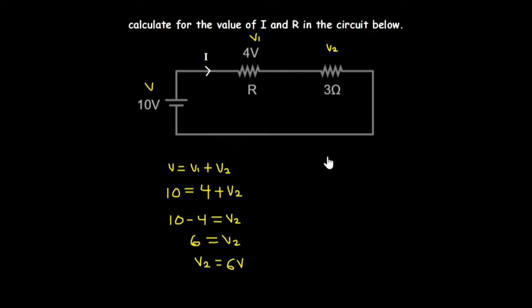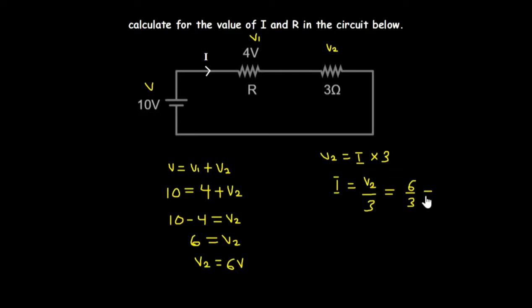To calculate the current I, we use the formula V2 equals I times 3 ohms. So I equals V2 divided by 3, which is 6 divided by 3, giving a value of 2 amperes. Now we have I equal to 2 amperes.